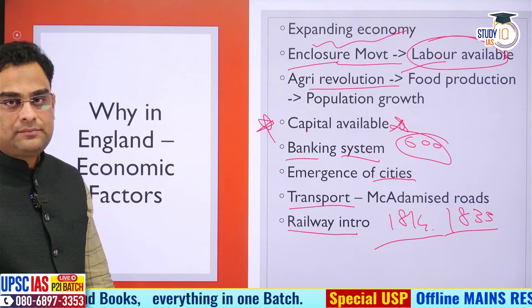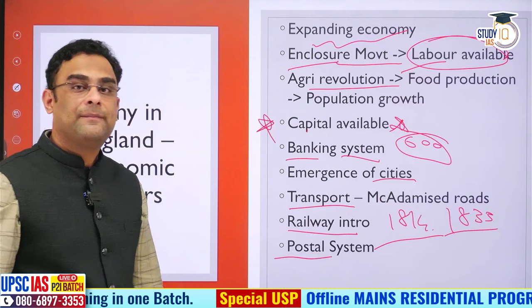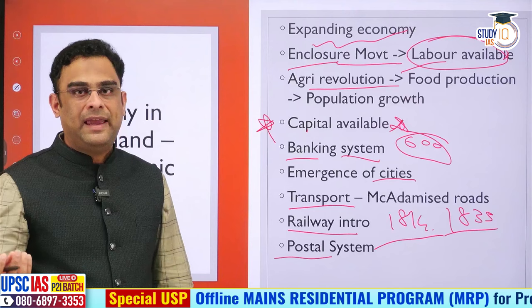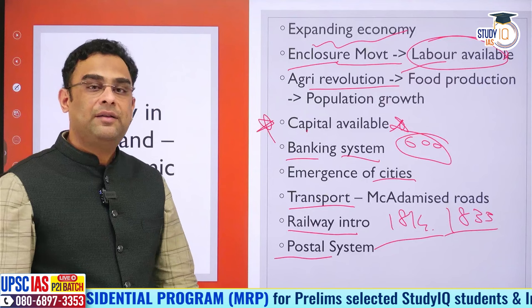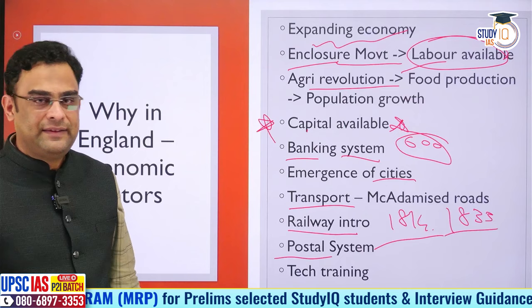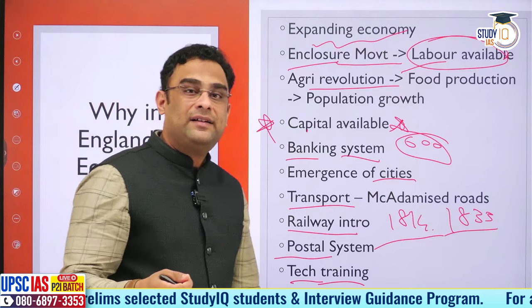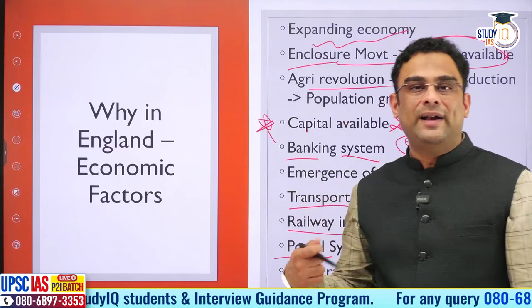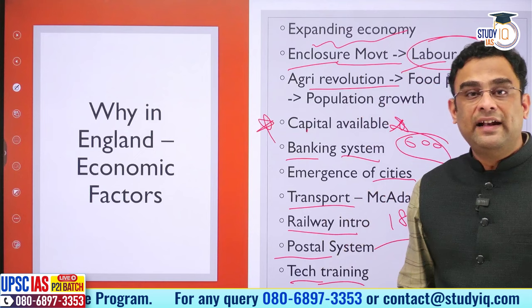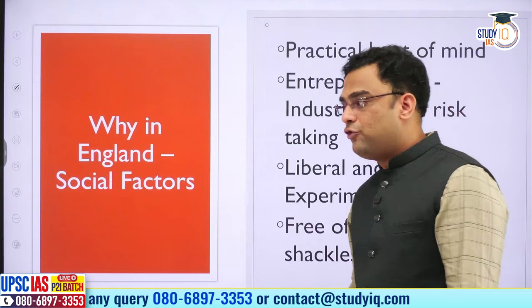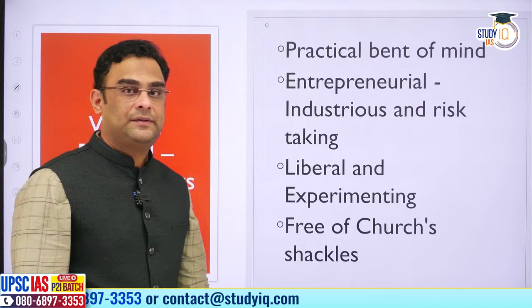By 1833, railways were used for transporting people as well. Modern postal systems also developed — using stamps for paying for postal services with uniform rates regardless of distance. Lastly, technical training: industrial revolution required skilled people — plumbers, fitters, welders, fabricators — all these trades were taught in specialized institutes in England, making skilled manpower available. So we have seen geographical, political and economic factors explaining why industrial revolution started in Britain.